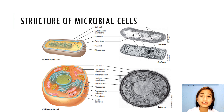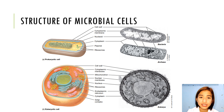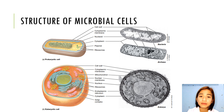Most prokaryotic cells have only a single chromosome, but many also contain one or more small circles of DNA distinct from the chromosome called plasmids. Plasmids typically contain genes that are not essential and confer some special property on the cell. The genomes of bacteria and archaea are typically small and compact, with most containing between 500 and 10,000 genes encoded by 0.5 to 10 million base pairs.